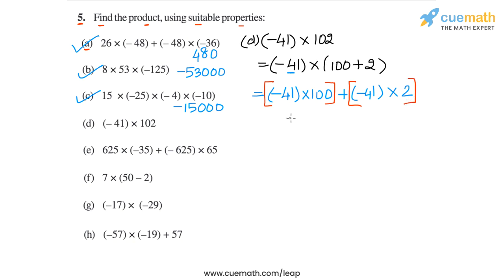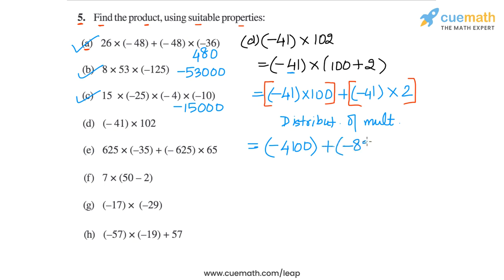The property being used here is distributivity of multiplication. So minus 41 into 100 is minus 4100, and minus 41 into 2 is minus 82. Adding these gives minus 4100 plus minus 82, which equals minus 4182. So the answer in part D is minus 4182.